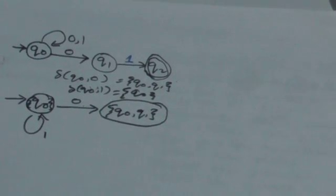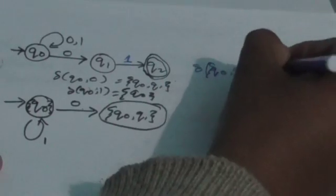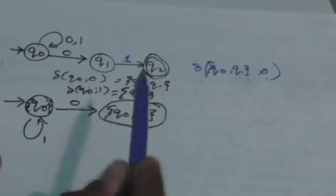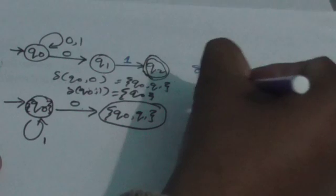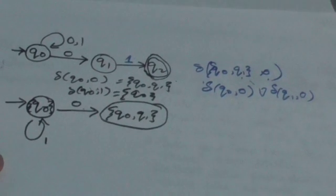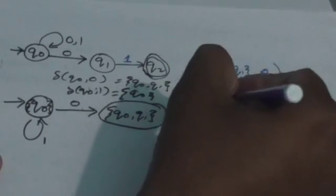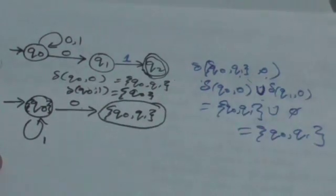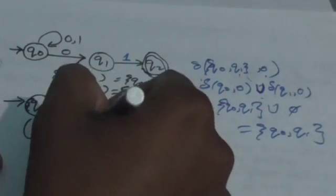To find delta({q0, q1}, 0), apply input symbol 0 individually to each state in the set: delta(q0, 0) union delta(q1, 0). Delta(q0, 0) gives {q0, q1}, and delta(q1, 0) has no transition, so the result is {q0, q1}. When you apply 0 to state {q0, q1}, it remains in the same state {q0, q1}.